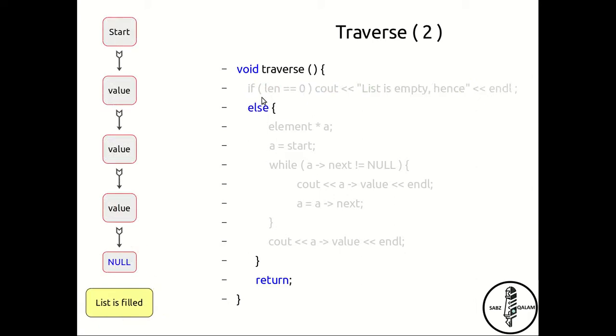But what happens if the list is filled? Well, it's the else condition which now is invoked. The first thing you do when you want to traverse a linked list is create a pointer a. So element pointer a, and then a has been initialized to start. In other words, a now points to the first element of our linked list. Both start and a point to our first element.